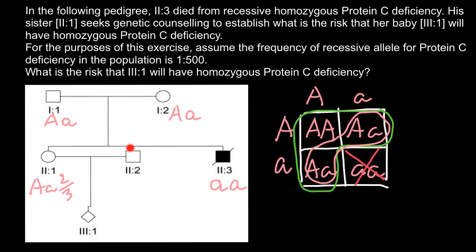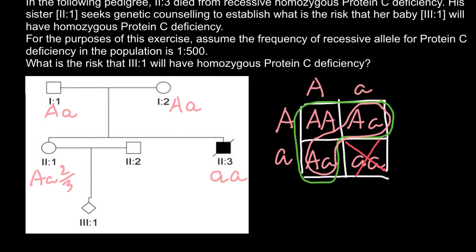We have found that the probability for sister 2.1 to be a carrier or heterozygous is 2 out of 3. Now let's find the probability that her partner — this phenotypically normal, unrelated person — is also a carrier. In order to answer this question, we need to use the Hardy-Weinberg formula.